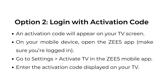Option number two: login with activation code. An activation code will appear on your TV screen. On your mobile device, open the ZEE5 app. Make sure you're logged in. Go to settings, activate TV in the ZEE5 mobile app, and enter the activation code displayed on your TV.